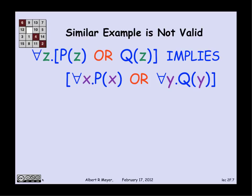And this one we're going to show is not valid. Let's think about it for a minute. What it's saying is if everything has either property P or property Q, that implies that everything has property P or everything has property Q. Well, when you say it that way, it's clearly not the case.